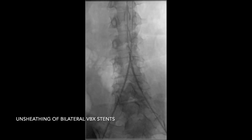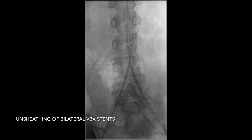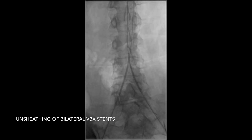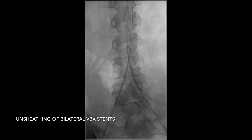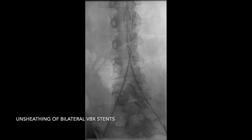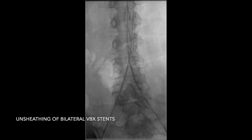The bilateral common iliac arteries measured roughly 7 mm in size, and the infrarenal abdominal aorta distal to the inferior mesenteric artery measured roughly 14 mm in size. Thus, we proceeded with stenting of the aortic bifurcation and common iliac arteries using bilateral 7 mm VBX balloon-expandable stents.